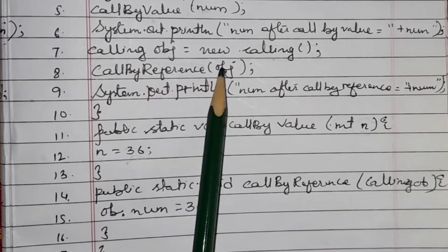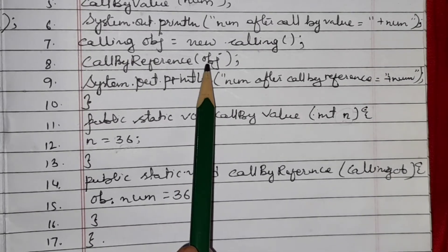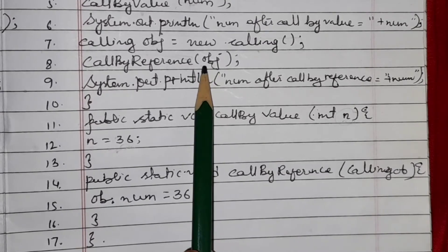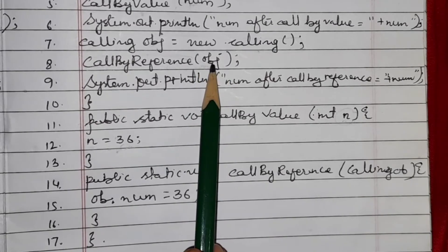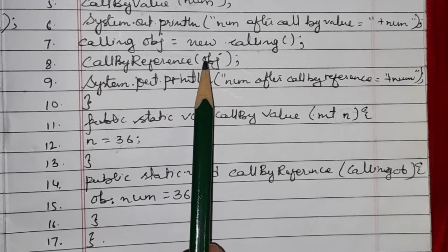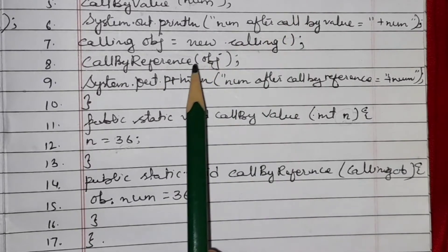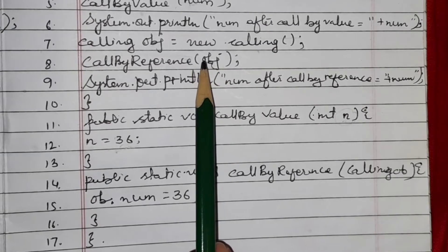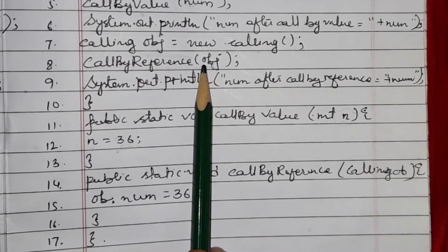The object 'obj' is not a primitive data type — it is not one of the 8 defined types — so it is called by reference. 'int' is primitive, so it is called by value. 'obj' is non-primitive, so it follows the call by reference mechanism.